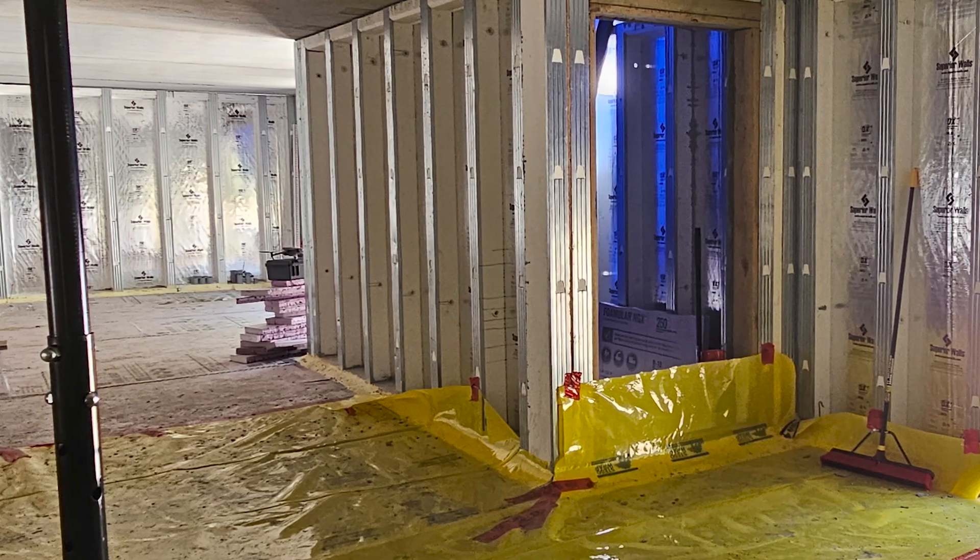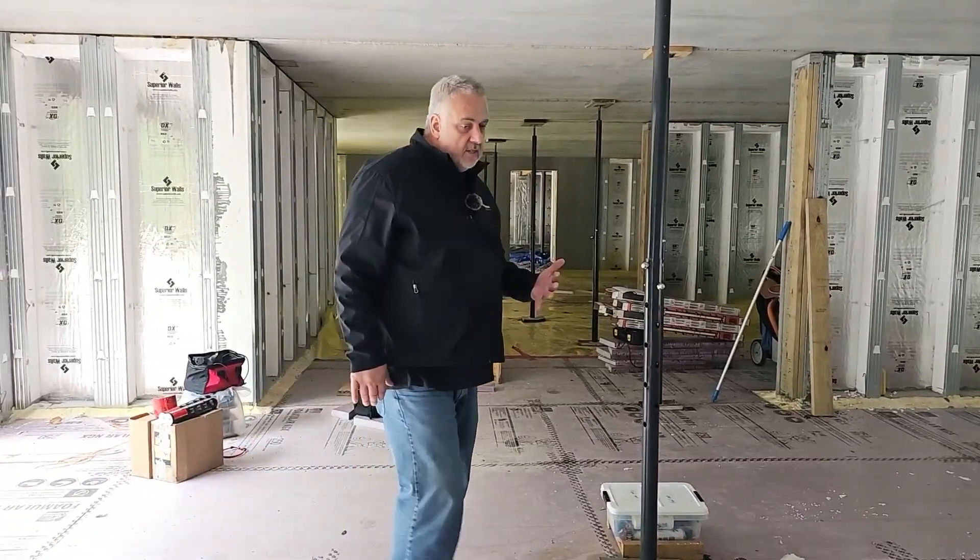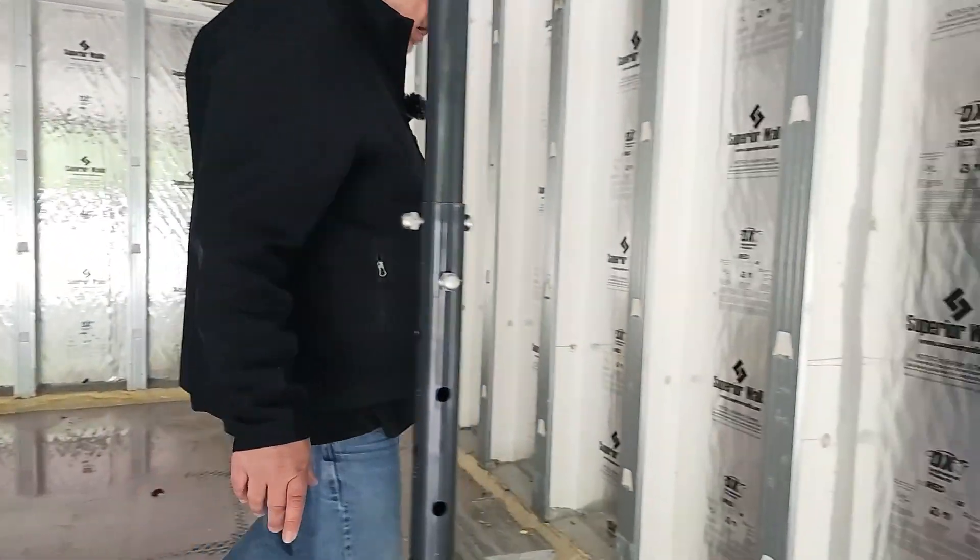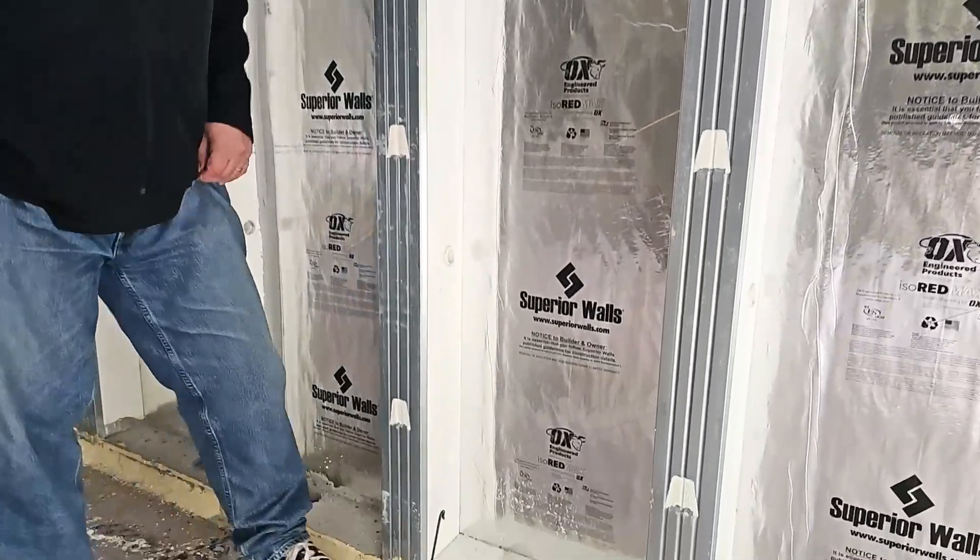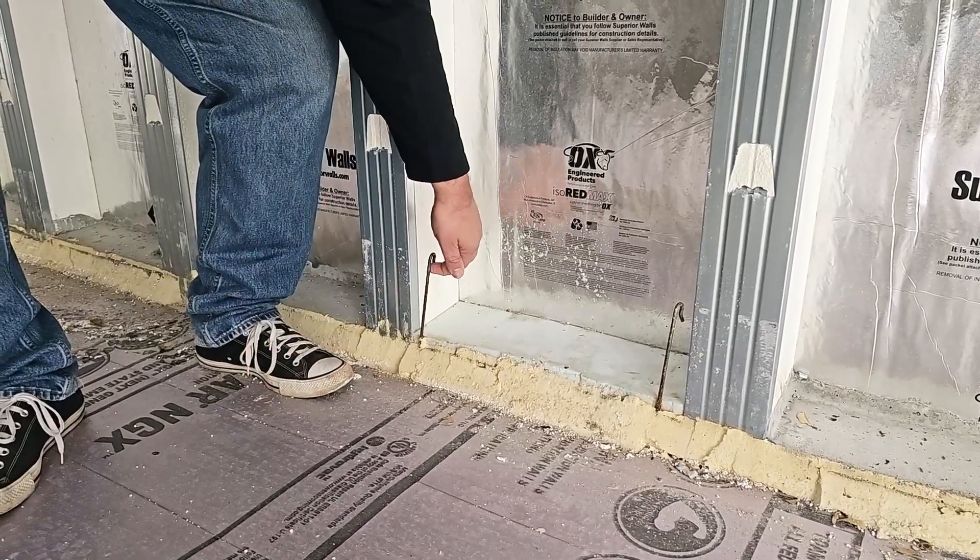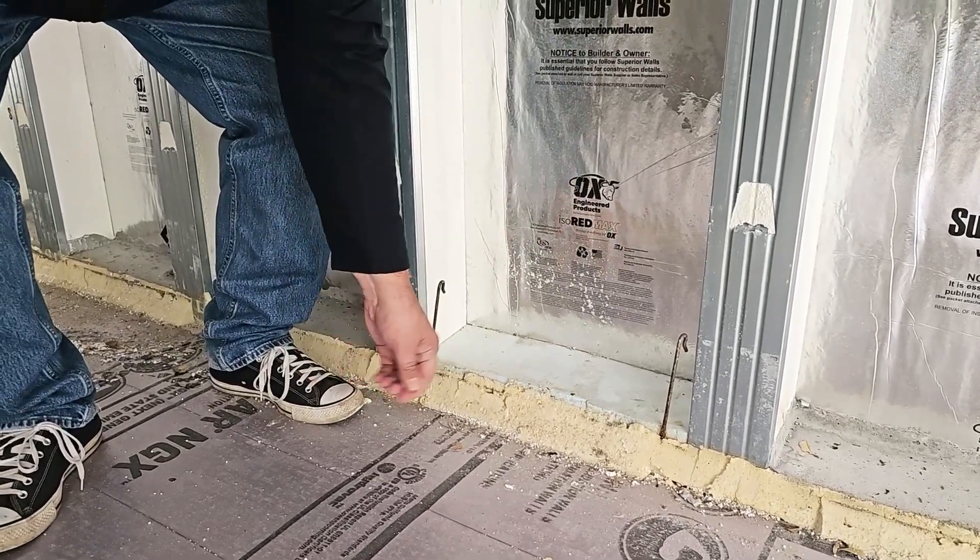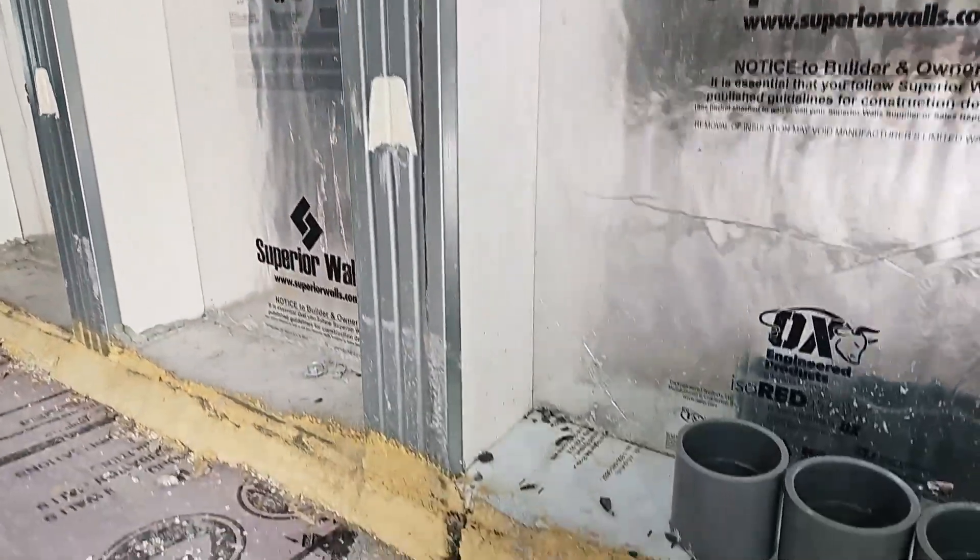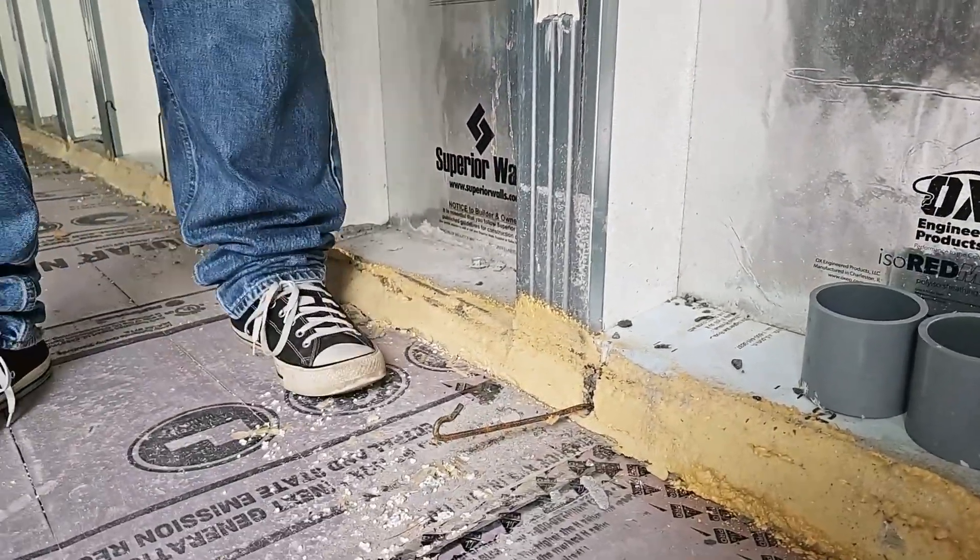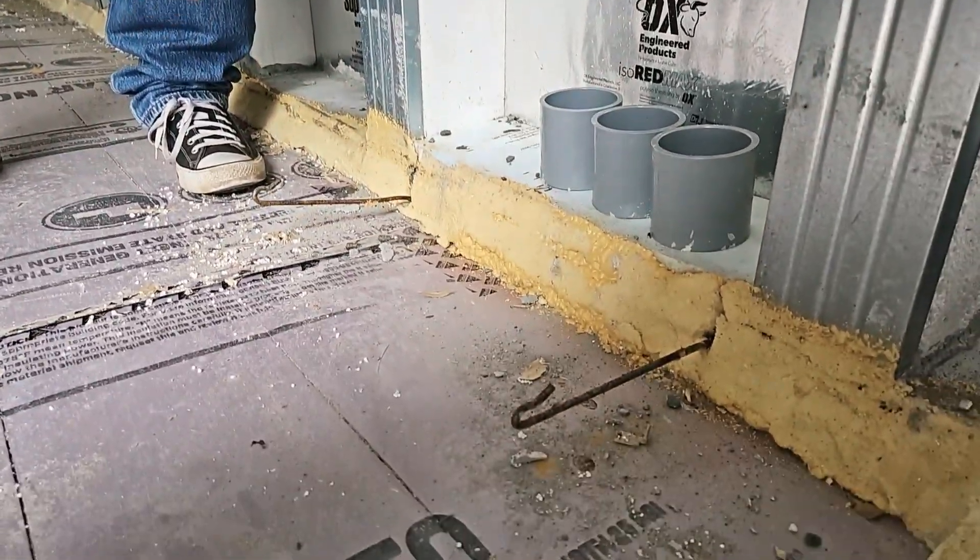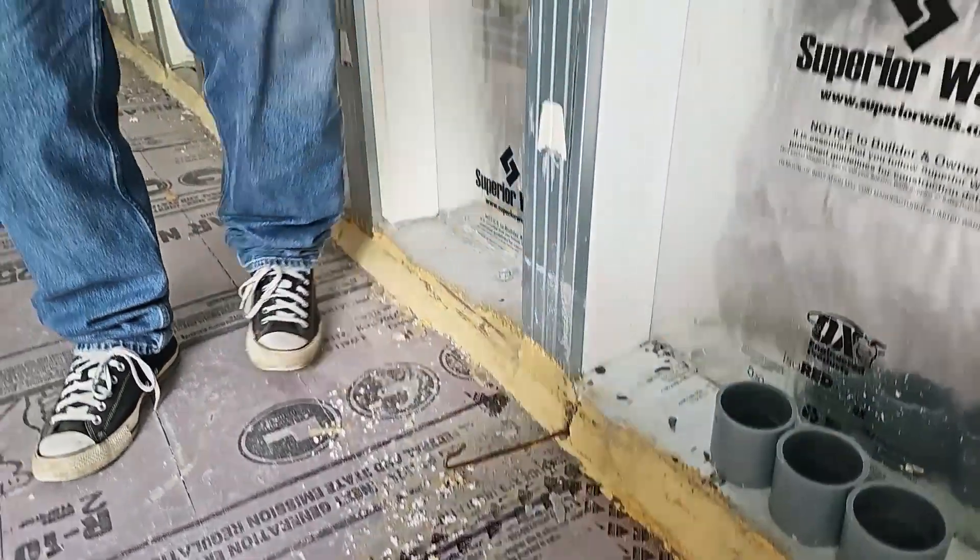You can see we have our Superior Walls, our precast walls all around us. Now a couple things about the Superior Wall is that they actually have these little clips that fold down. These are embedded inside and these fold down and that little clip there you're able to click in rebar. You can see here there's a couple that are folded down here.